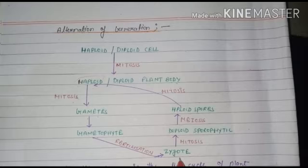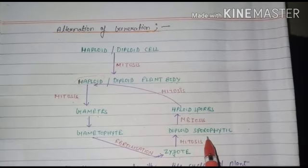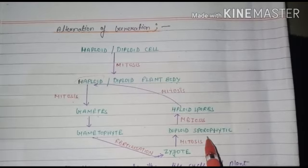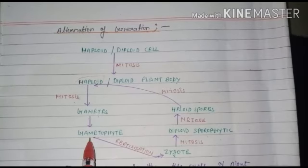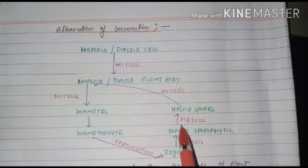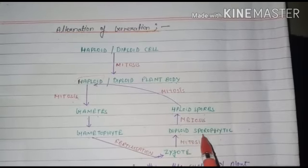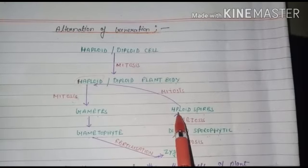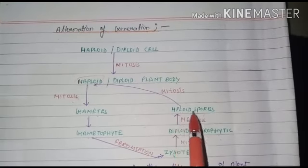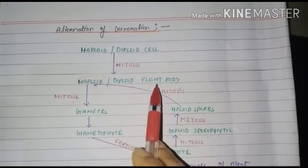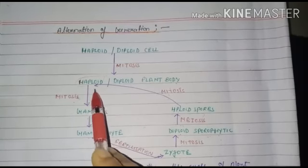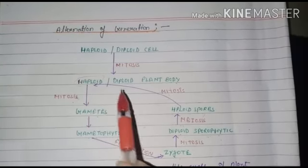The gametophyte undergoes fertilization and forms a zygote. After fertilization, a zygote forms, and this zygote undergoes mitosis to form a diploid sporophyte plant body. The plant body which forms spores is sporophytic, and the plant body which forms gametes is gametophytic. The sporophyte then undergoes meiosis to form haploid spores, which again undergo mitosis to form a haploid plant body.